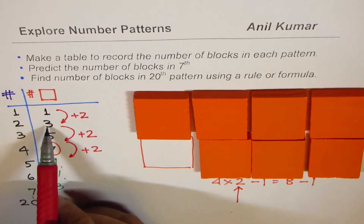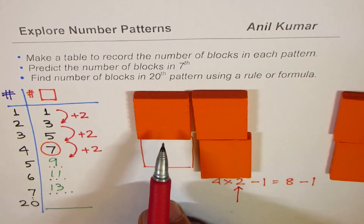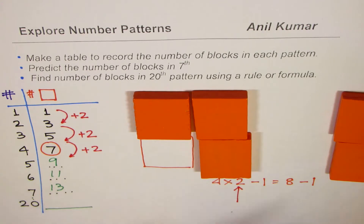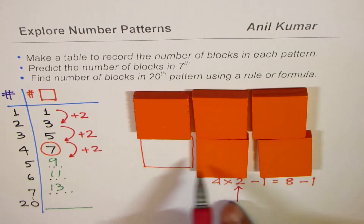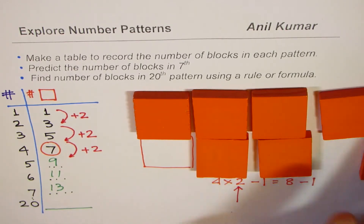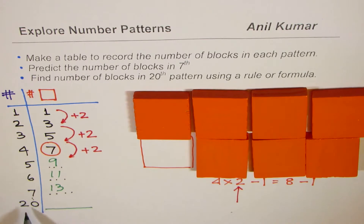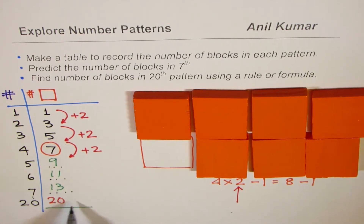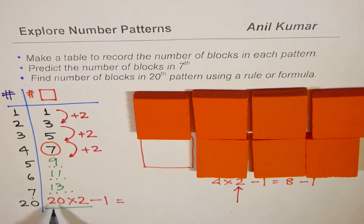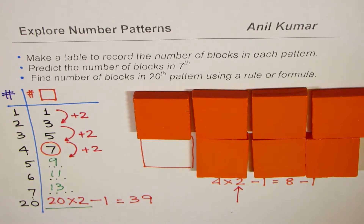If I do 2 times 2, I get 4. Look here — in the second block we have 4 minus 1. In the third pattern we have 6 minus 1, and then this pattern continues. So in the 20th pattern, what do you expect? We expect 20 times 2, double this 20, and take away 1, which is equal to 40 minus 1 or 39 — one less than 40. So that is how you can actually find the number of blocks in any pattern by finding a rule.